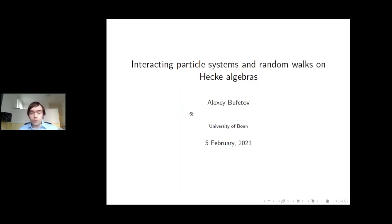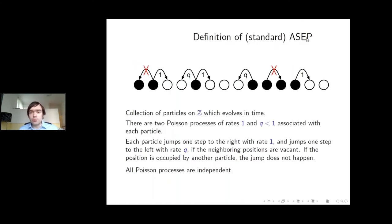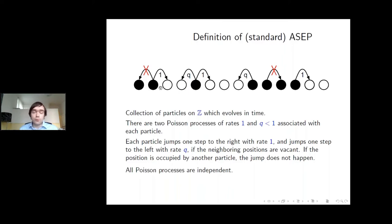Let me start with the definition of the Asymmetric Simple Exclusion Process — ASEP. This is a system of particles on integers: we have integers, and at every integer we can have either a particle or a hole. This choice — for every position whether we have a particle or not — is the space of configurations of our system. We will study random configurations, so these particles will evolve according to certain quite simple rules that include randomness.